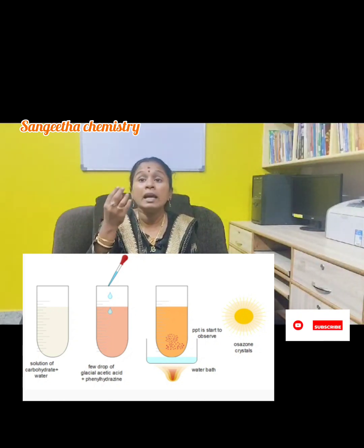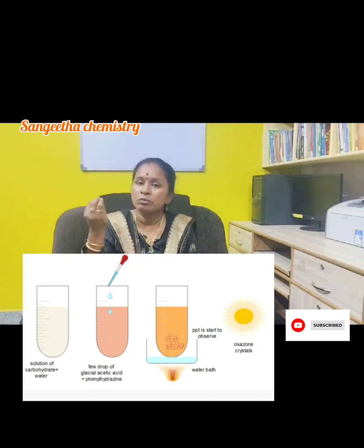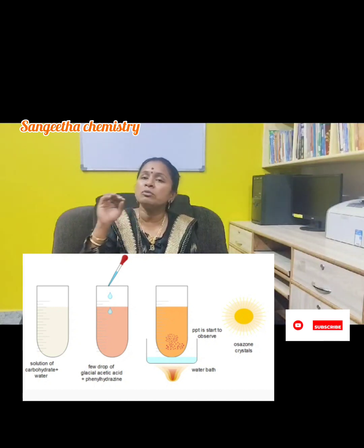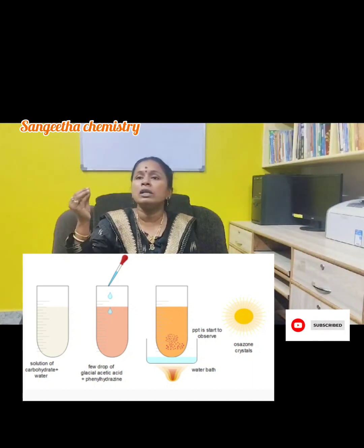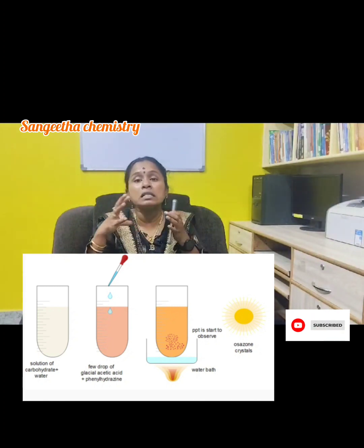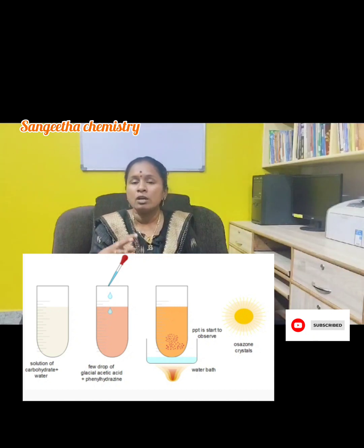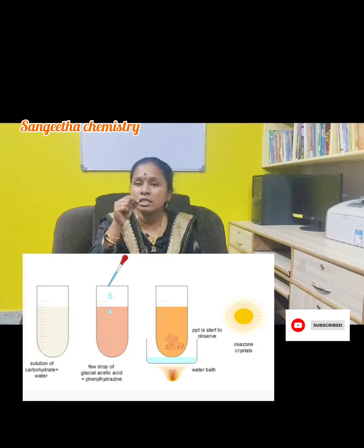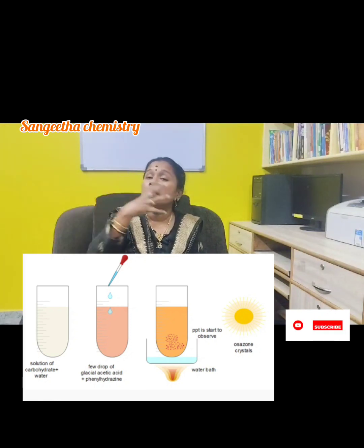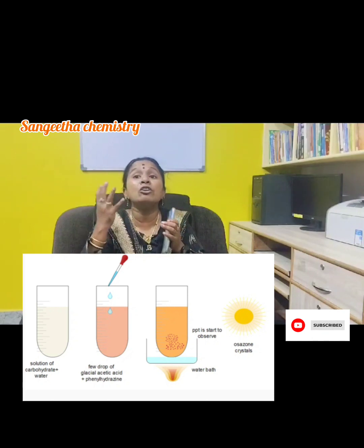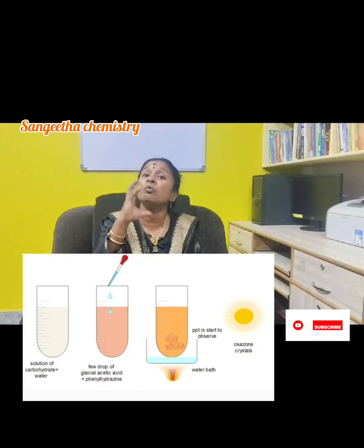It takes about 30 minutes. For monosaccharides, crystals can form within 1 to 10 minutes. Disaccharides take 30 to 35 minutes. In the Osazone test, condensation and oxidation reactions take place. If there is an aldehyde group at C1 and a keto sugar at C2, phenylhydrazine reacts with monosaccharides or disaccharides to form 1,2-diphenylhydrazone — that is the Osazone crystals.